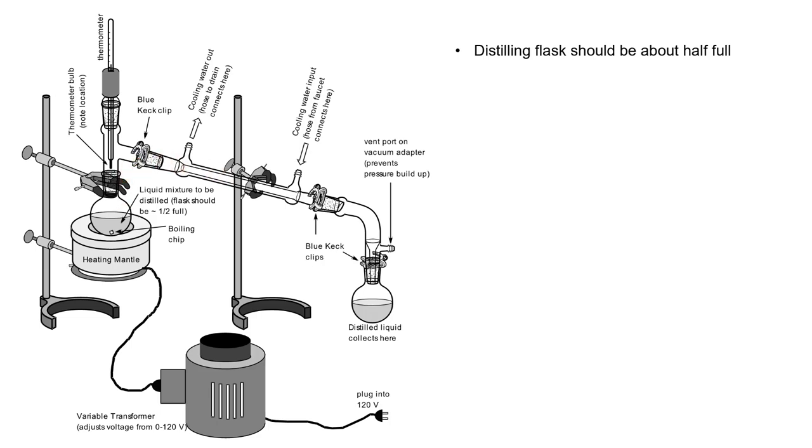If it's less than half full, you can lose a lot of material in a process called holdup. Holdup is the loss of material because some liquid needs to vaporize to fill the volume of the flask. If the flask is very large, a lot of material will be stuck in the flask as a vapor.